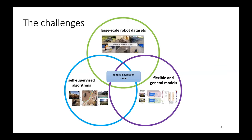So what are the challenges that we have to deal with to make this happen? We have to figure out appropriate algorithms, and these algorithms need to be suitable for leveraging very diverse kinds of navigational data. They need to make very weak assumptions about how that data is actually labeled — in the same way that you could train a language model on any text data you can pull off the Internet. Our aim will be to develop methods that can leverage any kind of navigational data so that we can use as much of it as possible. We'll also need to collect large robot datasets and design flexible, general, scalable models that can be pre-trained on all this data and adapted to downstream tasks.